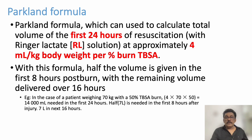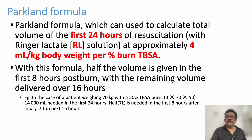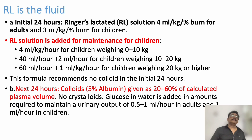Ringer's Lactate is the preferred solution — it is the most physiological and cheapest option. Normal saline can be given but large volumes risk hyperchloremic acidosis and electrolyte imbalance, which are benign but avoidable. Plasmalyte is also an excellent physiological option. In adults the dose is 4 ml/kg/% burn area; in children it is 3 ml/kg/% burn area.